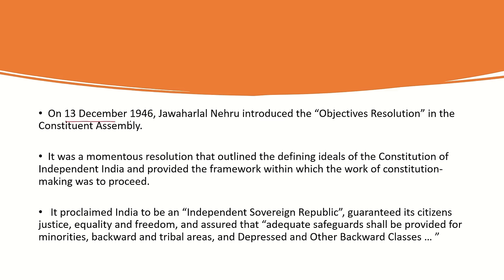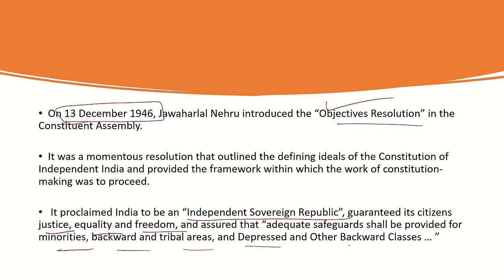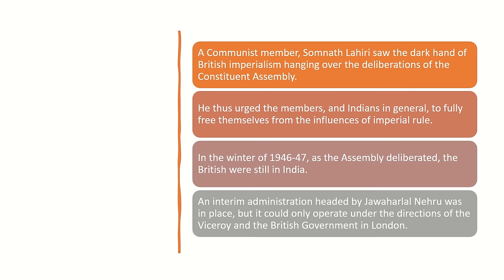On 13th December 1946, Jawaharlal Nehru introduced the Objectives Resolution. It explained how the constitution of an independent India would be structured and how it would work. It claimed that India would be an independent sovereign republic, and that every citizen would be assured justice, equality, and freedom. Adequate safeguards would be provided for minorities, backward classes, tribals, and depressed classes — everyone would get justice and freedom.